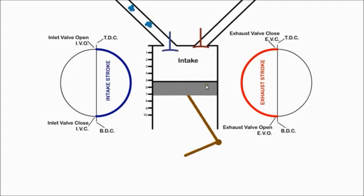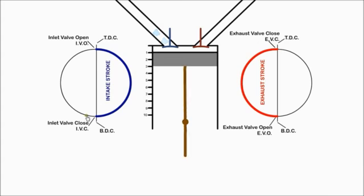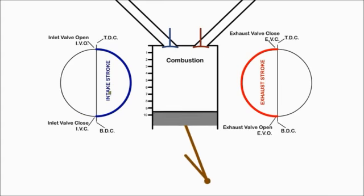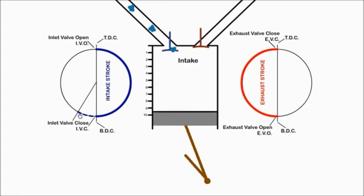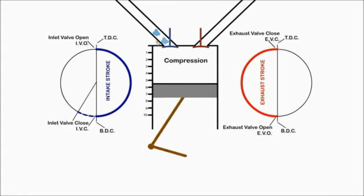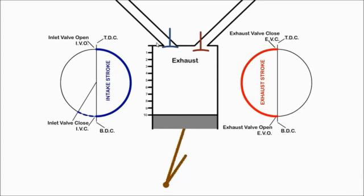If we look at the inlet valve closing at BDC, we see that a flow of air is blocked behind the valve from entering the cylinder. It would be much better to delay closing the valve until the increasing cylinder pressure stops the flow. Then we get more air into the cylinder.